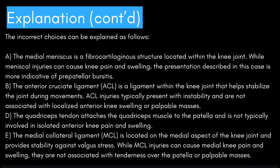Let's see why the other answer choices are incorrect. The medial meniscus is a fibrocartilaginous structure within the knee joint; while meniscal injuries can cause knee pain and swelling, this presentation is more indicative of prepatellar bursitis. ACL injuries typically present with instability and are not associated with localized anterior knee swelling or palpable masses. The quadriceps tendon is not typically involved in isolated anterior knee pain and swelling. The medial collateral ligament provides stability against valgus stress; MCL injuries can cause medial knee pain but are not associated with tenderness over the patella or palpable masses.